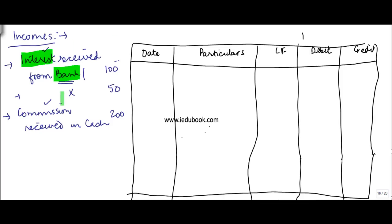When you get interest from the bank, your balance in the bank goes up. Bank is an asset, and increasing an asset is to be debited, so you debit the bank by 100. The other account is interest. Interest is income, and when you get interest your income is increased. Whenever income is increased, it has to be credited.